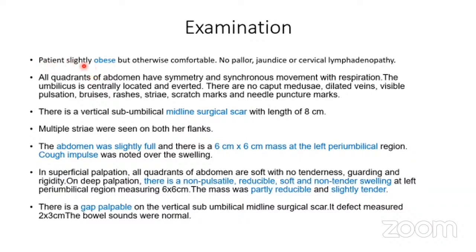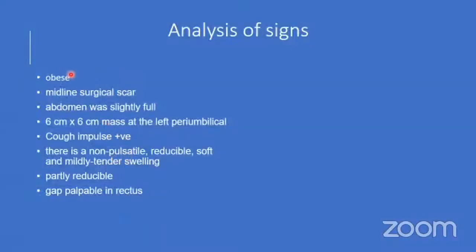The important signs have been highlighted in blue and will be summarized in the next slide. The patient is obese. There is a long midline scar about 8 to 10 centimeters from suprapubic right up to the umbilicus. The abdomen was slightly full, and there is a mass 6 by 6 centimeters at the left periumbilical region. Cough impulse was positive; there is a non-pulsatile, reducible, soft, non-tender swelling.